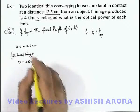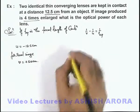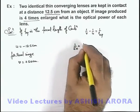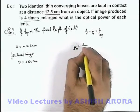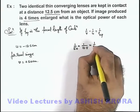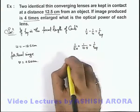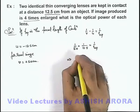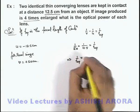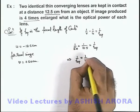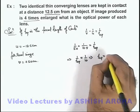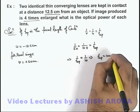If we substitute the values, this will be 1/50 plus 1/12.5 equals 1/f_equivalent. On simplifying, we get 1/f_equivalent equals 1/10, which implies the focal length of the combination is 10 centimeters.